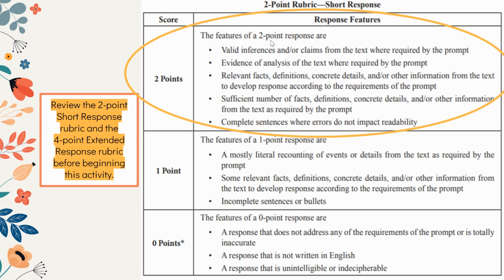The features of a 2-Point Response are: valid inferences and/or claims from the text where required by the prompt; evidence of analysis of the text where required by the prompt; relevant facts, definitions, concrete details, and/or other information from the text to develop the response according to the requirements of the prompt.